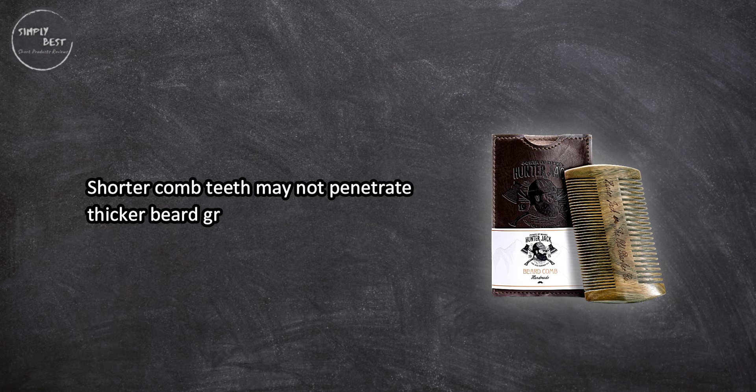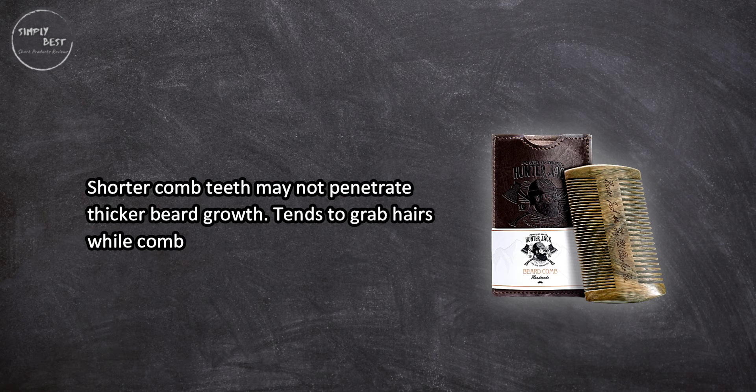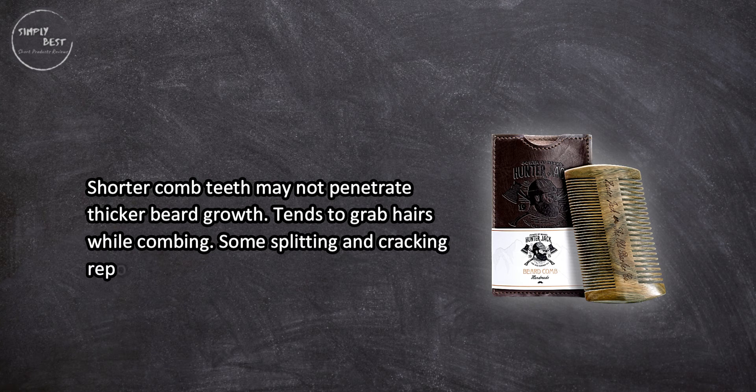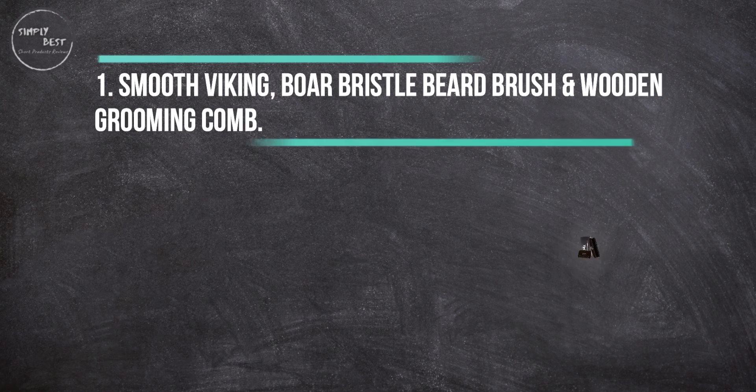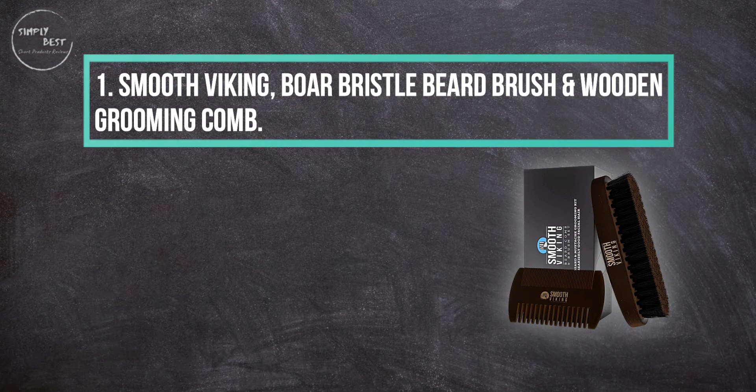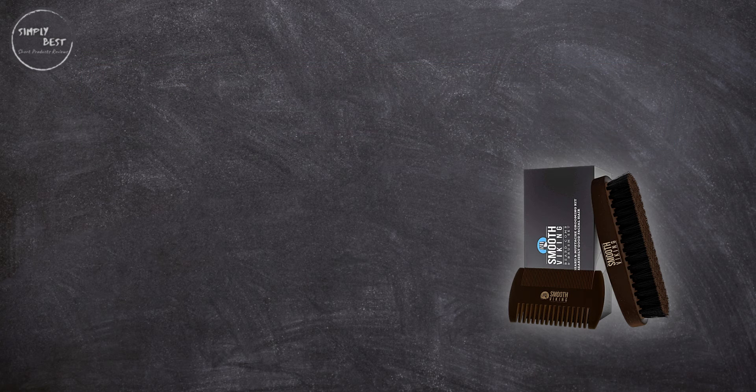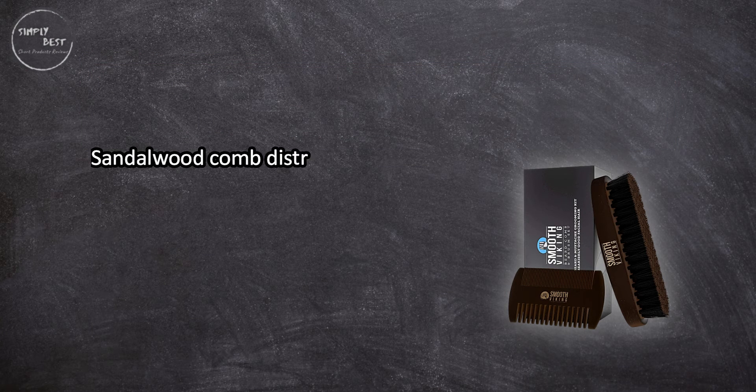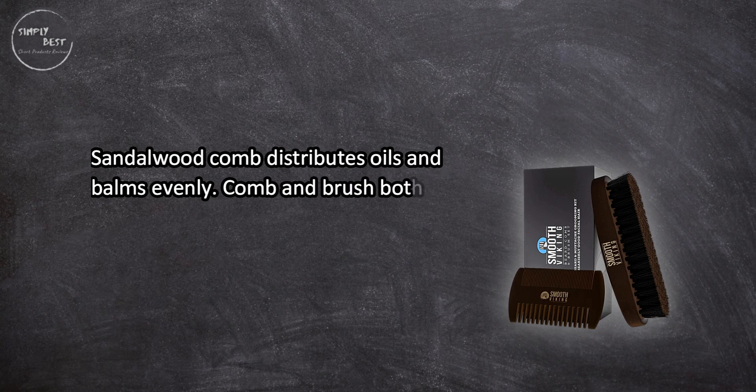Shorter comb teeth may not penetrate thicker beard growth. Tends to grab hairs while combing. Some splitting and cracking reported. At number one: Smooth Viking boar bristle beard brush and wooden grooming comb. Sandalwood comb distributes oils and balms evenly.